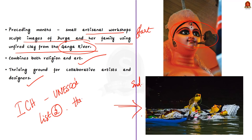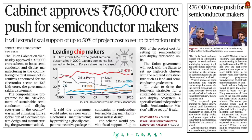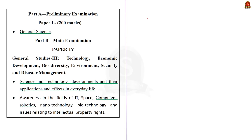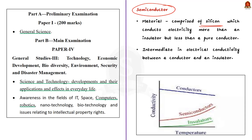The next news article discusses the government's plan to extend fiscal support for the setup of fabrication units in India, with the cabinet approving an amount of 76,000 crore rupees for semiconductors. In this context, we will discuss the India Semiconductor Mission and the importance of the semiconductor industry in India. A semiconductor is a material that usually comprises silicon and conducts electricity more than an insulator but less than a pure conductor.